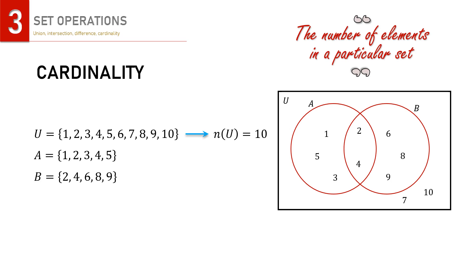n(U) is the number of elements in U, the universal set. Since U has 10 elements, we write n(U) = 10. Likewise, we can determine the cardinality of A and B in the same manner.